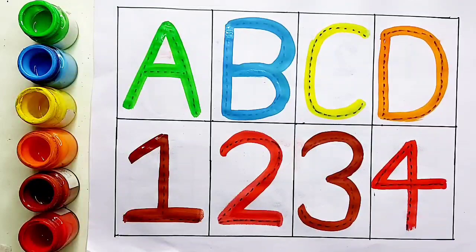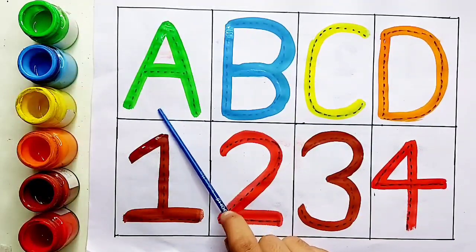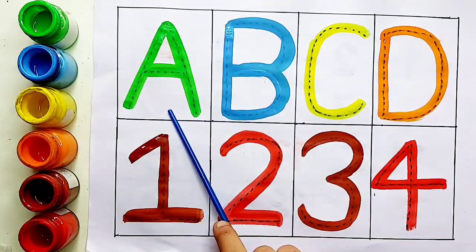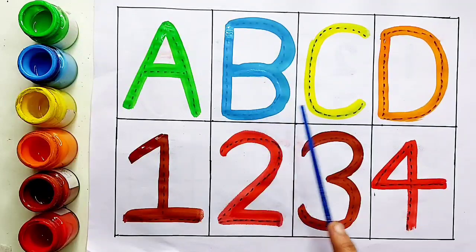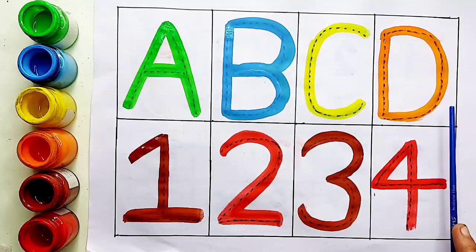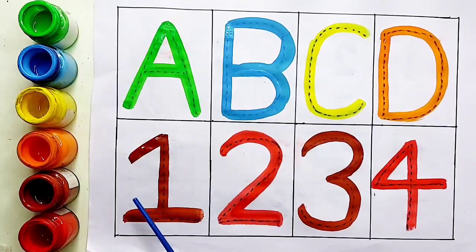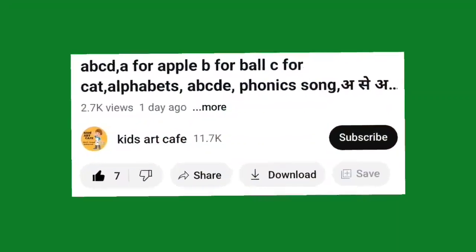A for apple. B, B for ball. C for cat. D for dog. And one, three, four.